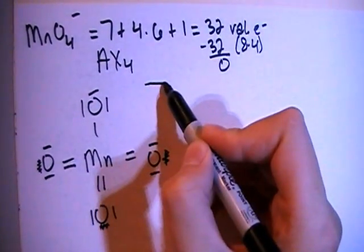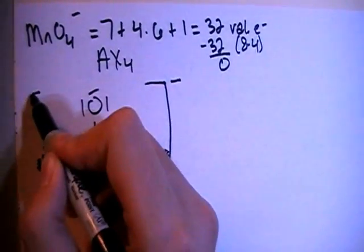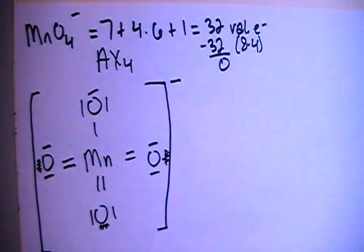And also don't forget to add in your brackets because this is an ion. You've got to put the charge up top.